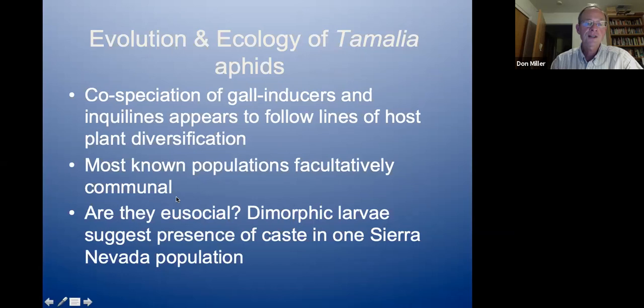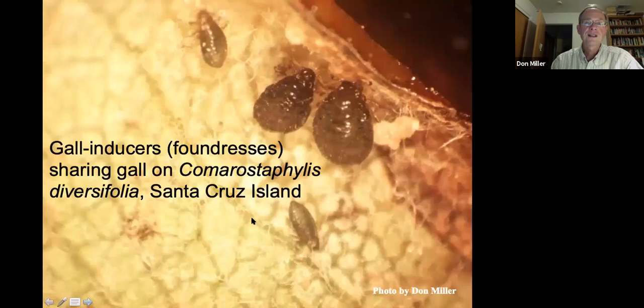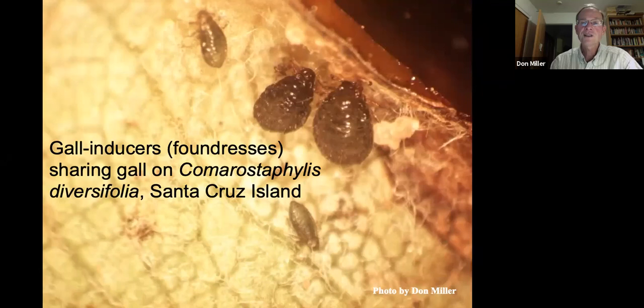The question of whether they might be eusocial is interesting. I have tantalizing evidence of a soldier-like caste in one Sierra Nevada population in El Dorado County. One of the genera on which these aphids induce galls is Comarostaphylis — also known as summer holly — which I discovered. It lives on Santa Cruz Island, other Channel Islands, and the immediate coast near Santa Barbara. Here are two females sharing gall space in a gall on Comarostaphylis diversifolia along with their offspring.